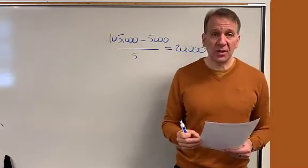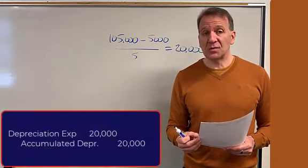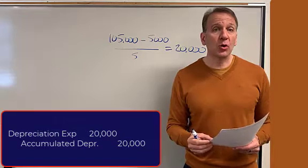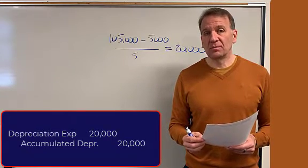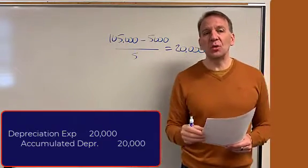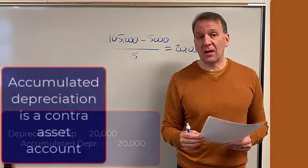The journal entry is to debit depreciation expense $20,000 and credit the accumulated depreciation $20,000. That's a new account. You're not familiar with accumulated depreciation. It's a contra asset account.